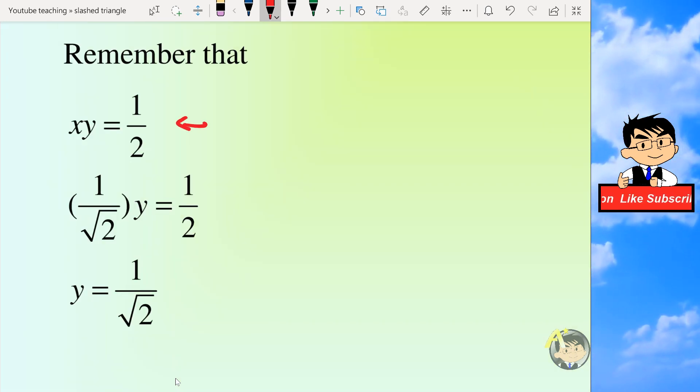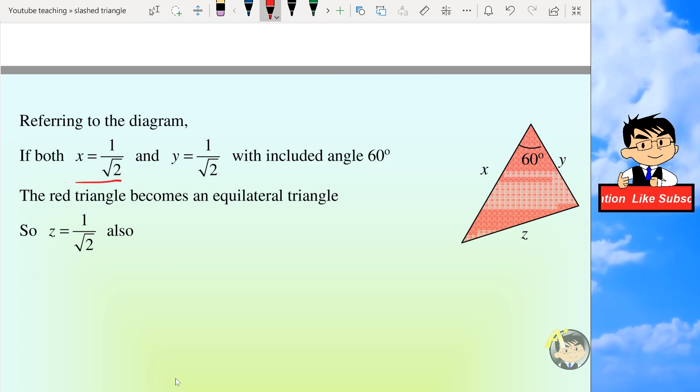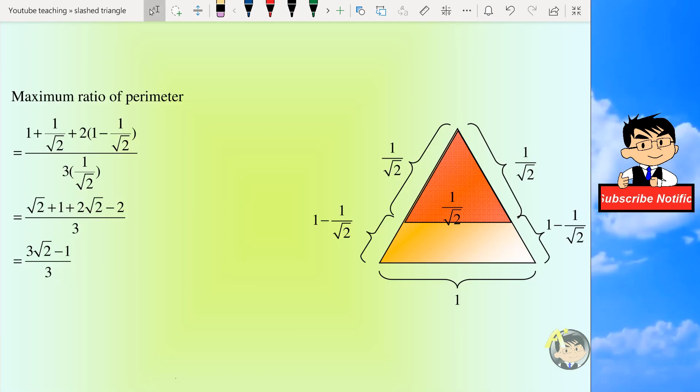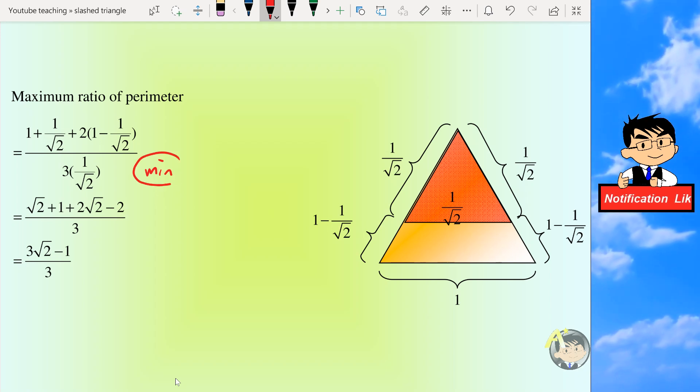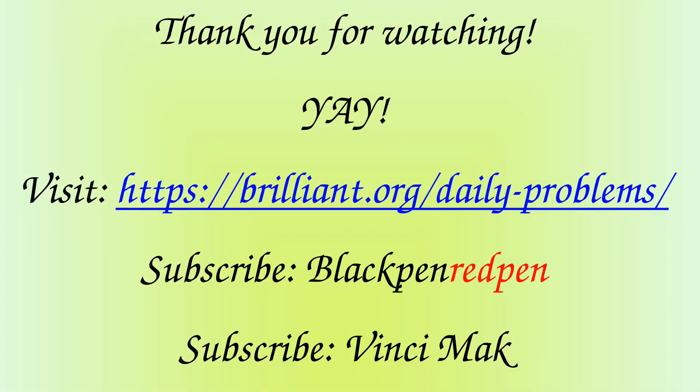And we apply the simple formula before, and then we can find y to be equal to 1 over root 2 also. From the diagram, if both x and y equal 1 over root 2 with the included angle to be 60 degrees, then the red triangle will become an equilateral triangle, and so z will also be 1 over root 2. So we can find the maximum ratio of perimeter now, because for the red triangle its perimeter is minimum, so for the other part it will be a maximum. And then after we put in all the side lengths, we simplify to get the final answer, that's the number 3 root 2 minus 1 over 3.